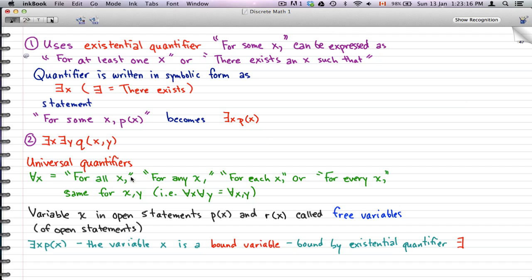So pretty much everything in that universe fits the statement. It's the same for x,y - we could just use ∀x∀y, which equals ∀x,y. That's the same thing as for existential quantifiers.